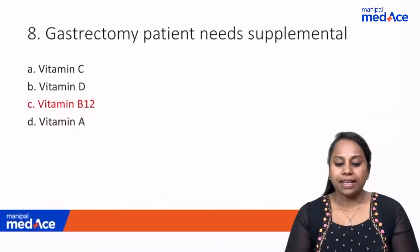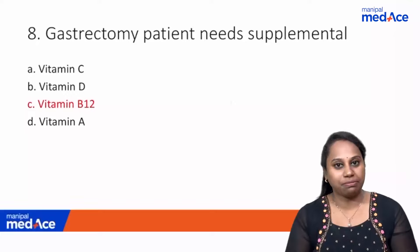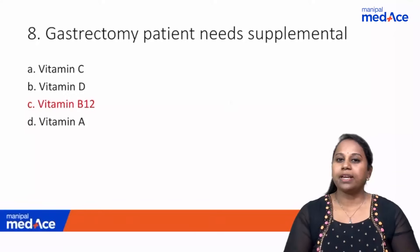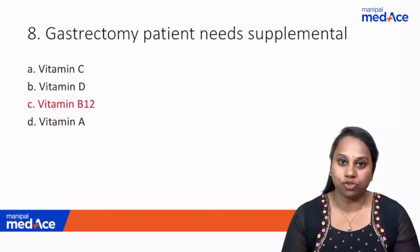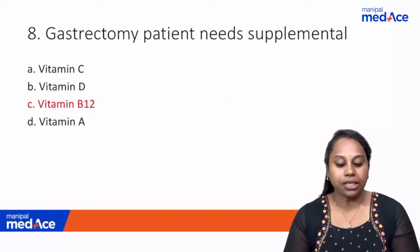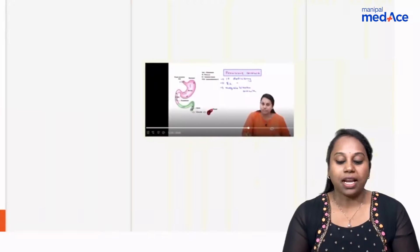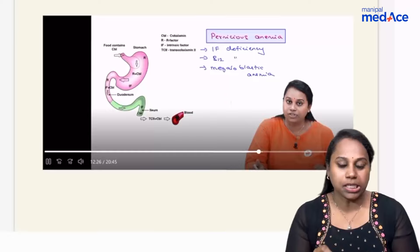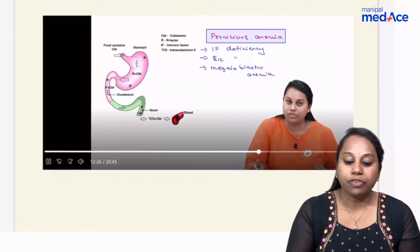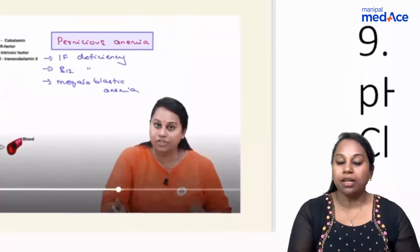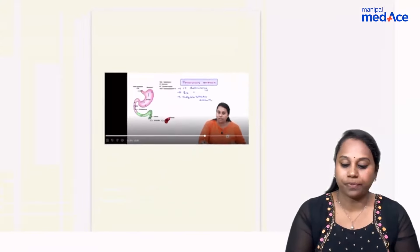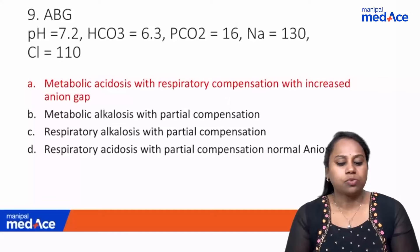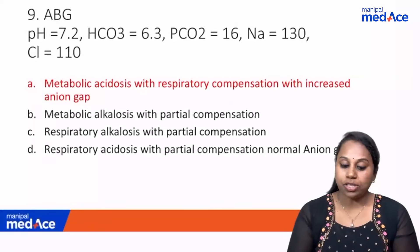Question 8: A gastrectomy patient needs supplemental vitamin B12. The stomach's parietal cells secrete intrinsic factor of Castle; its deficiency leads to B12 deficiency and megaloblastic anemia, called pernicious anemia. After gastrectomy, the patient will definitely need vitamin B12 (cobalamin) supplements.